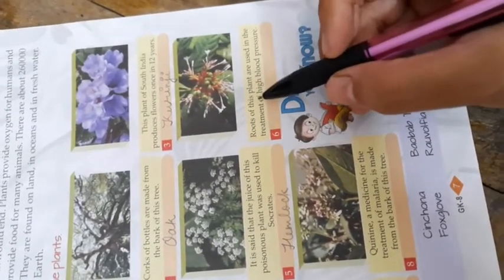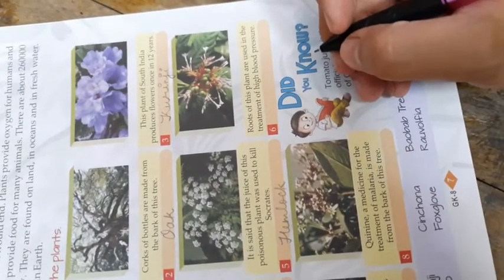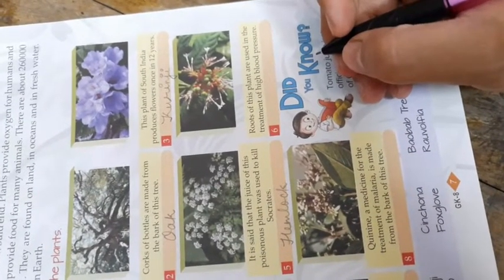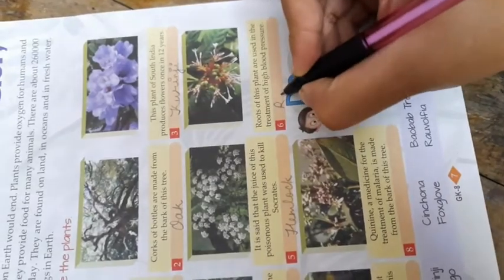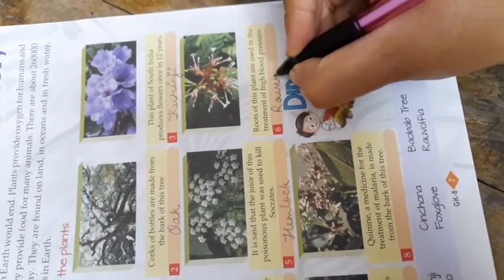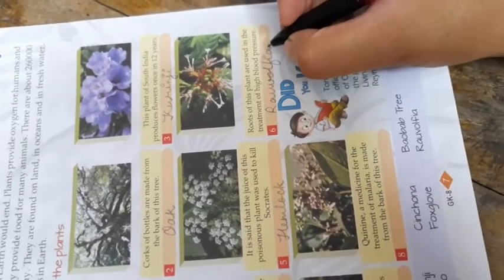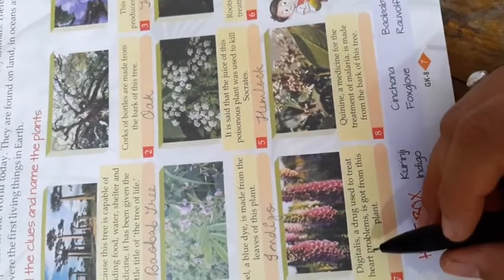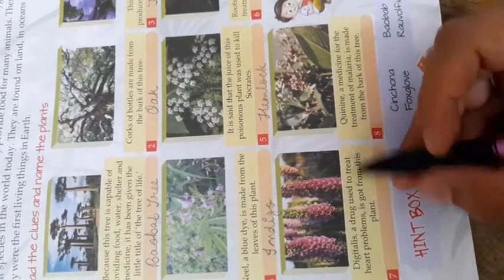Which plant is used in the treatment of high blood pressure? It is Rauwolfia — R-A-U-V-O-L-F-I-A, Rauwolfia. The seventh one: Digitalin is a drug used to treat heart problems.